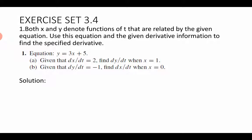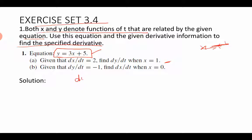Let's go to exercise set 3.4. Here, y is given as a function of x, and both x and y denote functions of t, related by the given equation. Use this equation and the given information to find the specified derivative. The given equation is y = 3x + 5. The question is to find dy/dt. When you differentiate with respect to t on both sides, the left side is dy/dt.